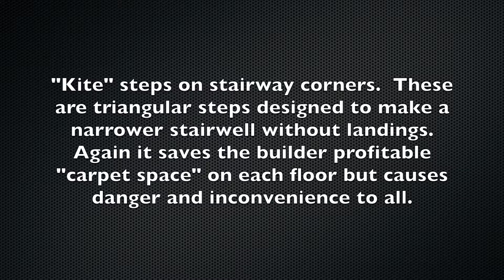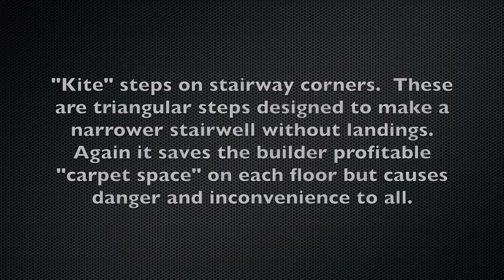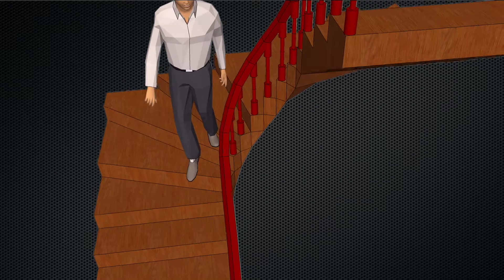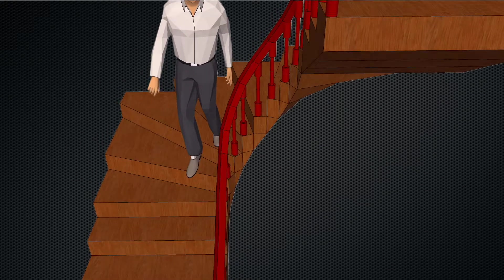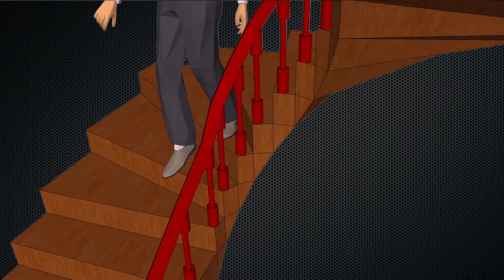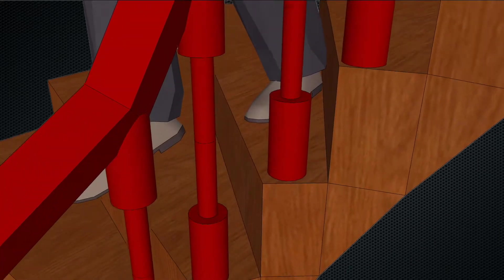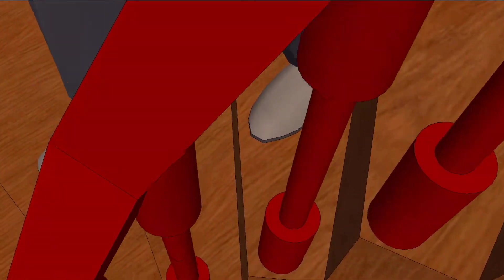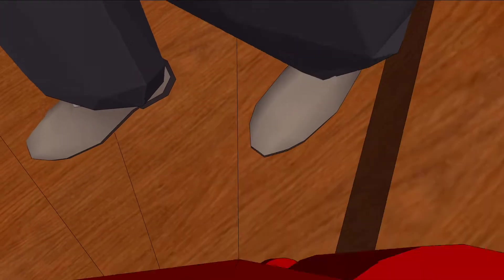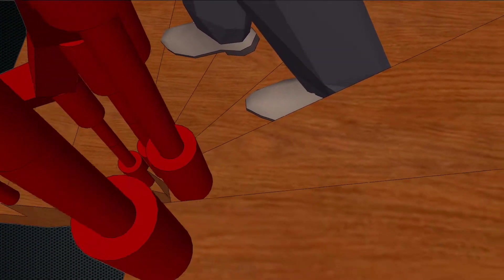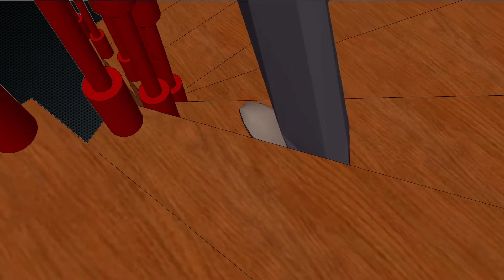Kite steps on stairway corners — these are triangular steps designed to make a narrower stairwell without landings. Again, this saves the build of profitable carpet space on each floor but causes danger and inconvenience to all. Like the spiral staircase, the narrow side of the step is very dangerous as the foot cannot cover the whole step.